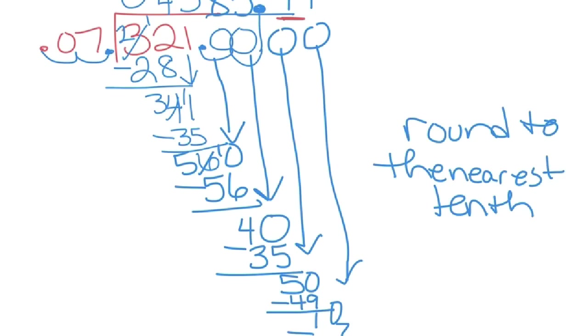We would look next door, see that we have a 1. 5 or more means to add one more when we round. 4 or less, just ignore. So, we would leave the 7 the way it is. And our final answer would be 4,585.7, okay?